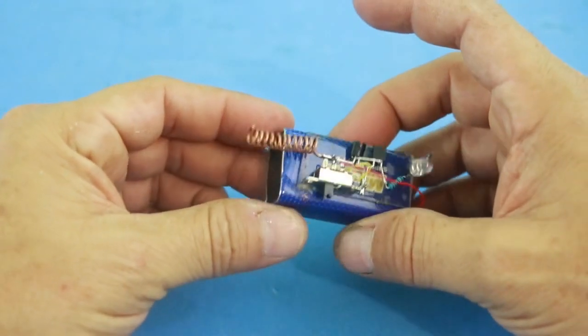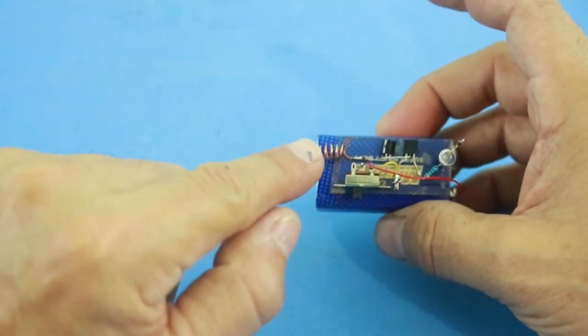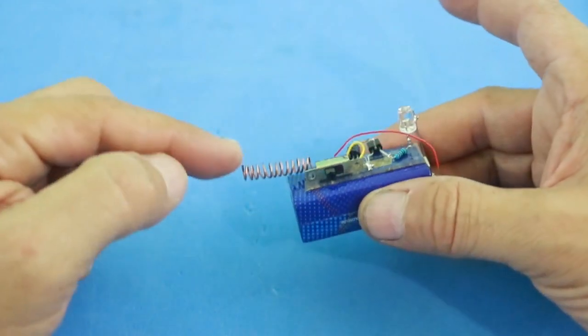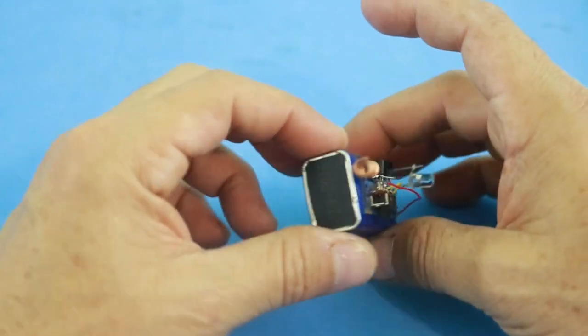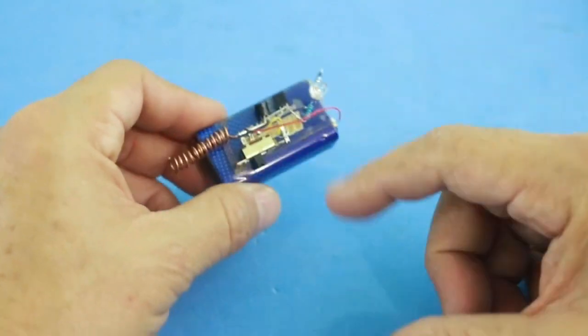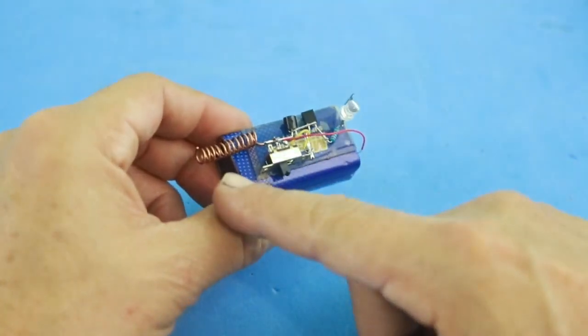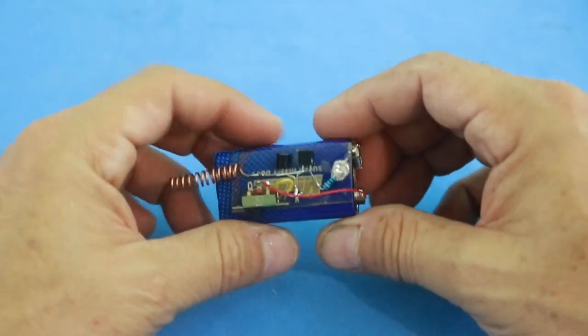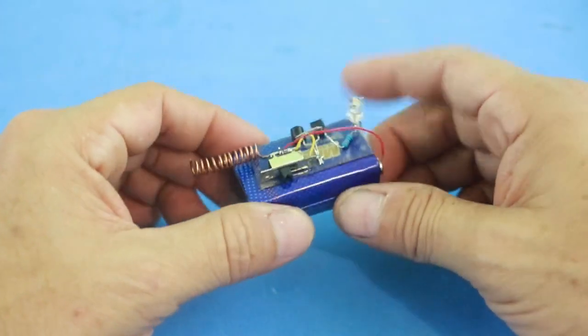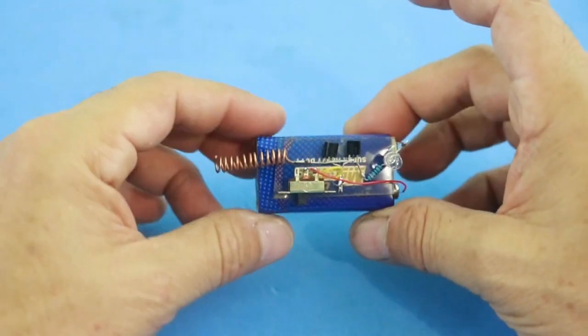So in this wire which is our antenna, a current will be induced when it is near another wire that carries AC and the circuit will amplify that tiny current in order to turn on the LED which indicates the presence of a current in the other wire.